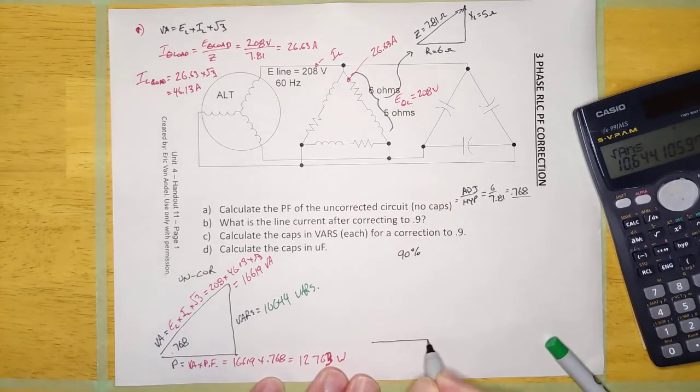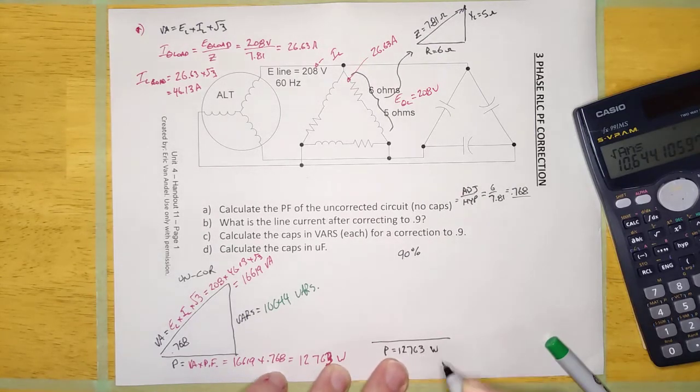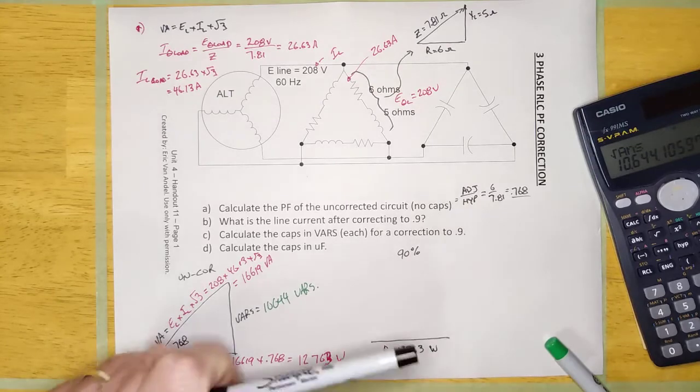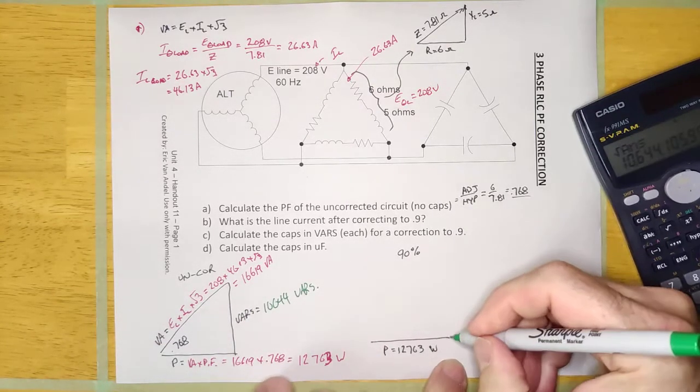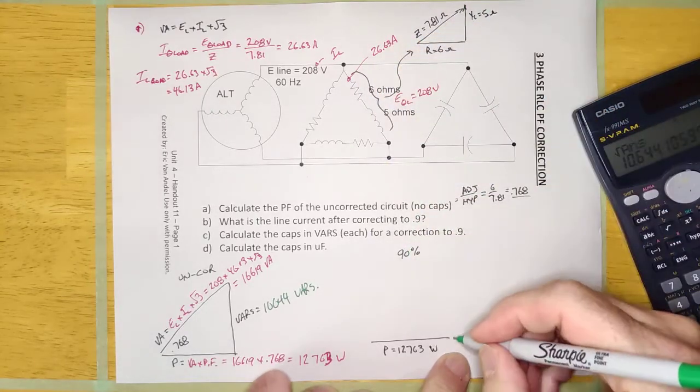And same as single phase now, right? P is equal to 12,763 watts. This VARS here, this 10,644, it's the inductor, right? VARS XL.